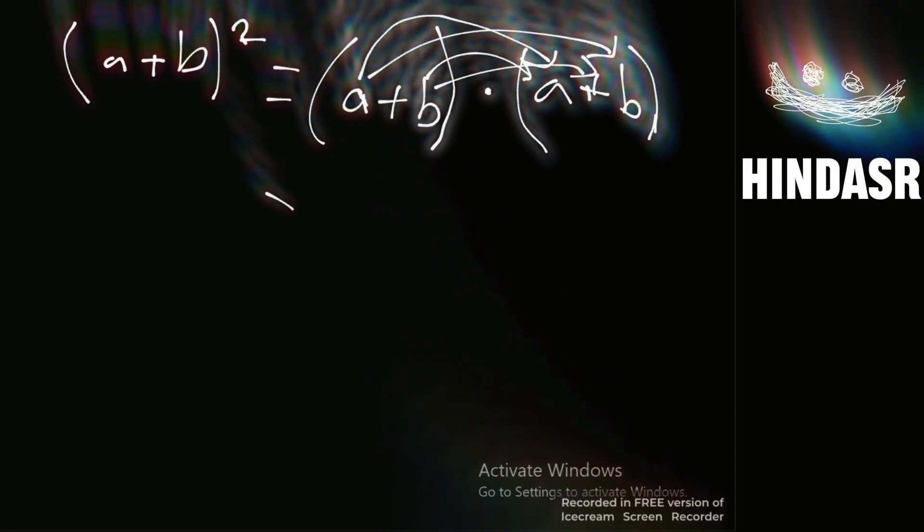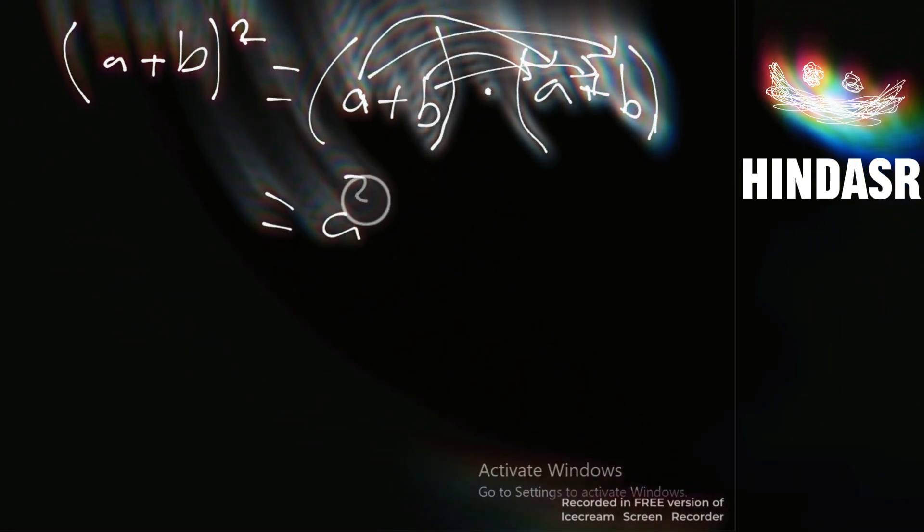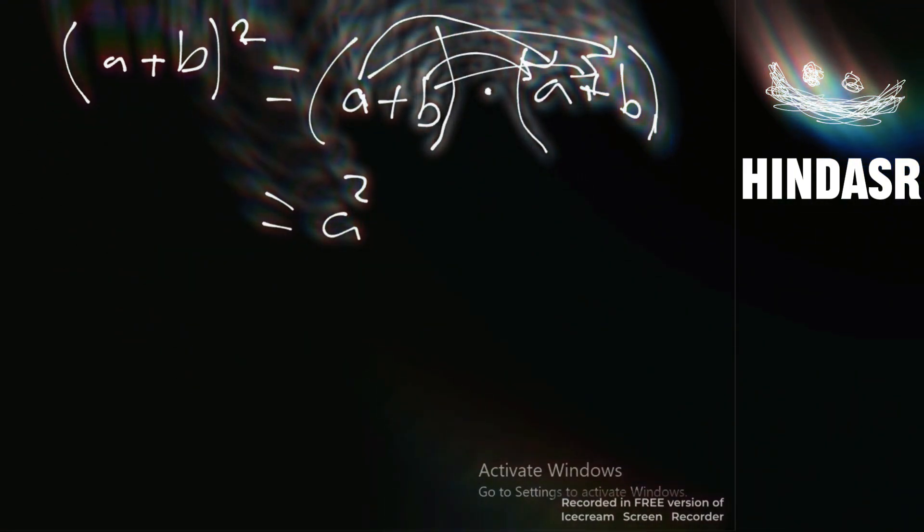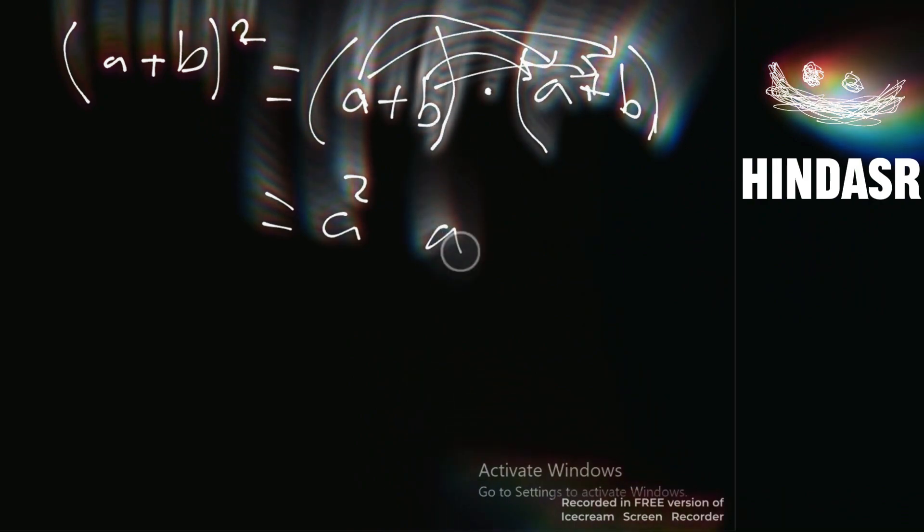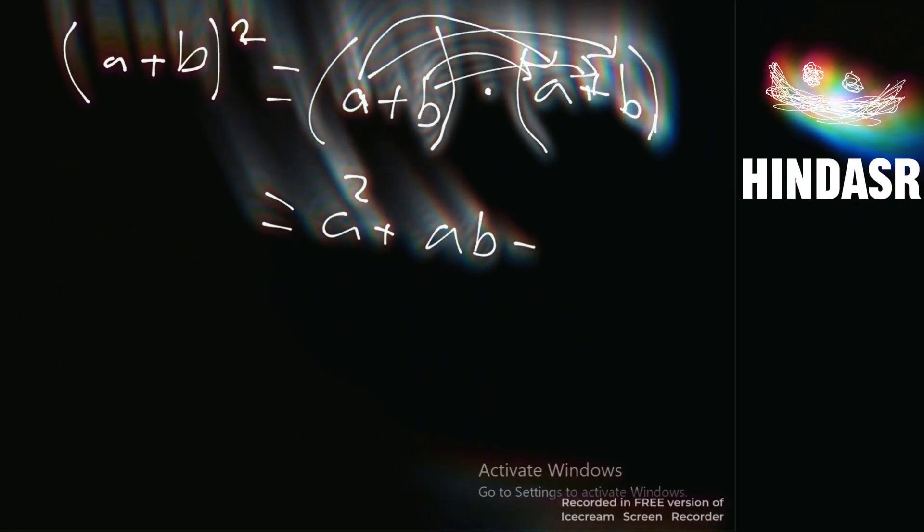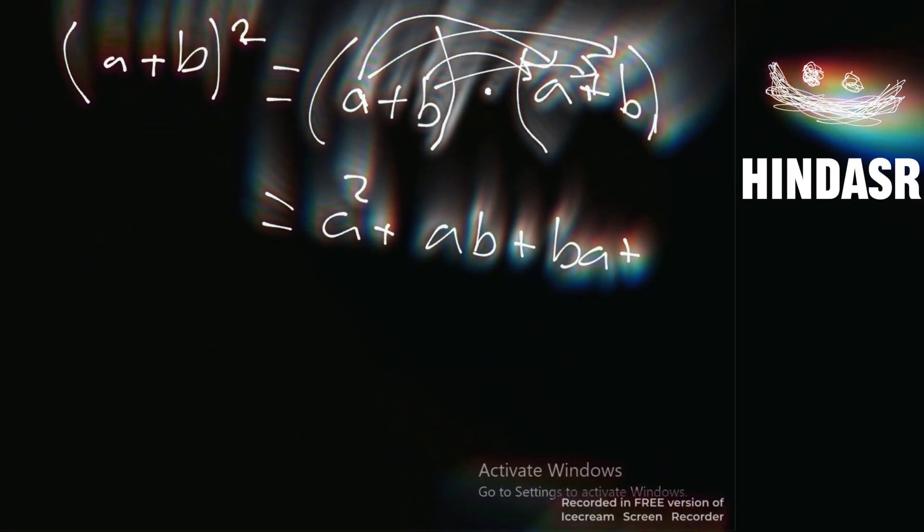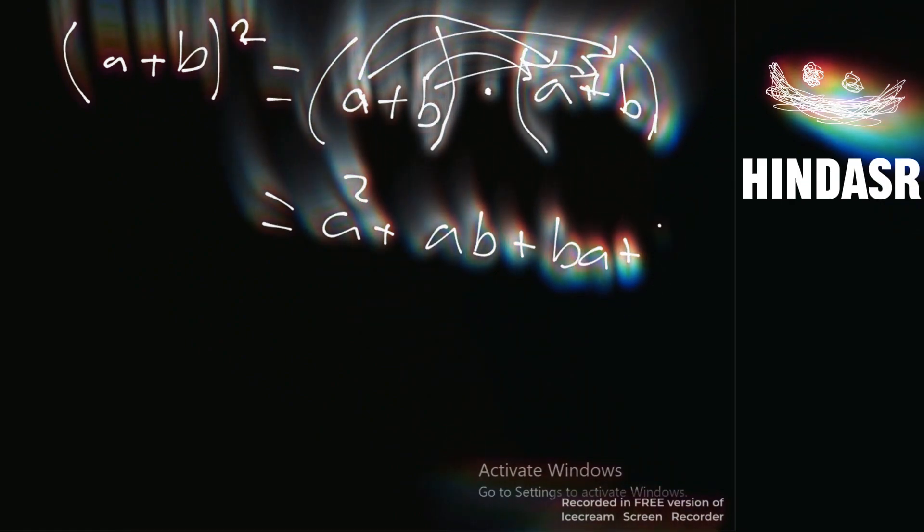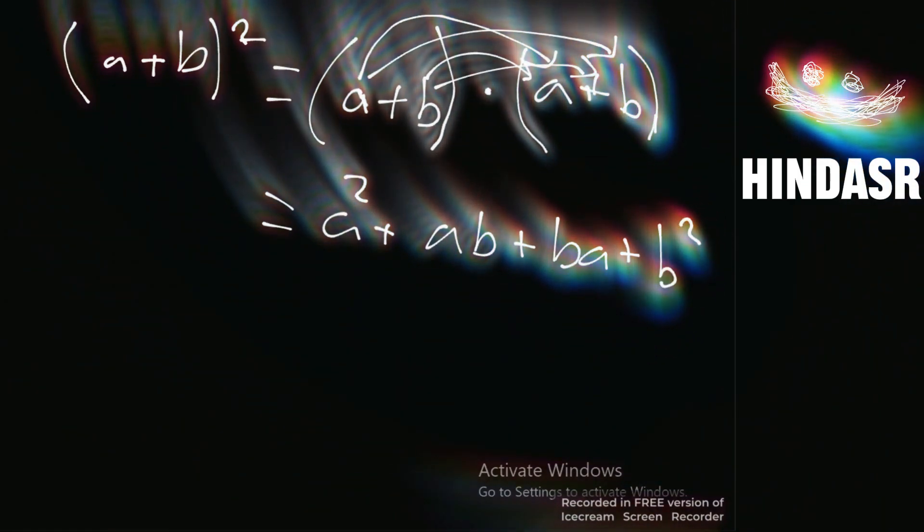So a times a equals a squared, a times b equals ab, and b times a is ba, and b times b is b squared.